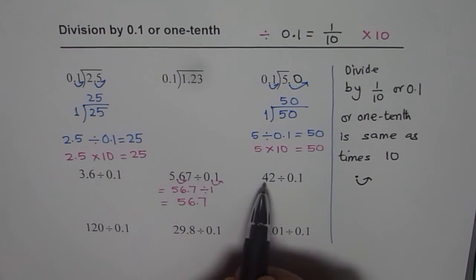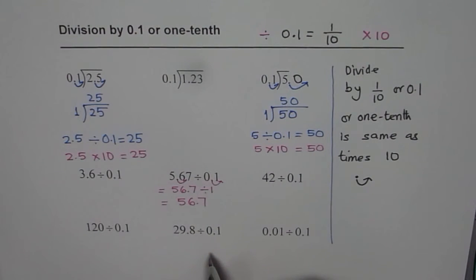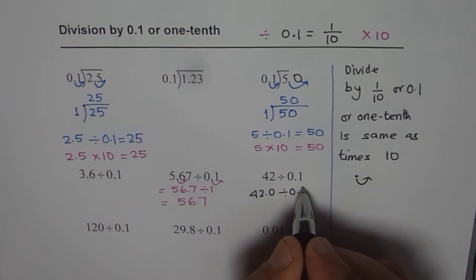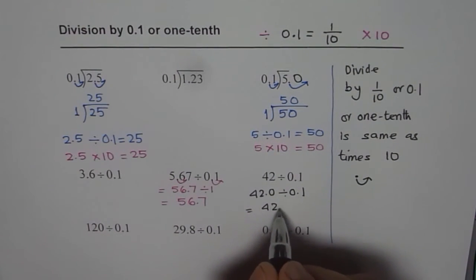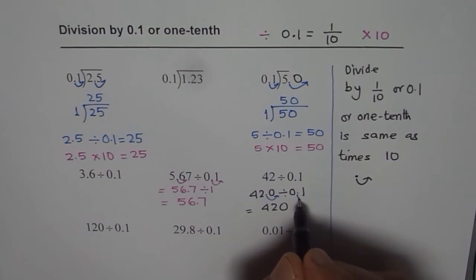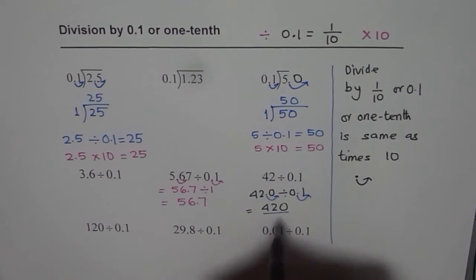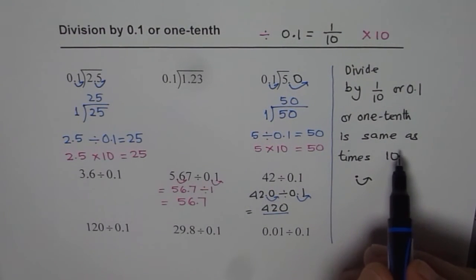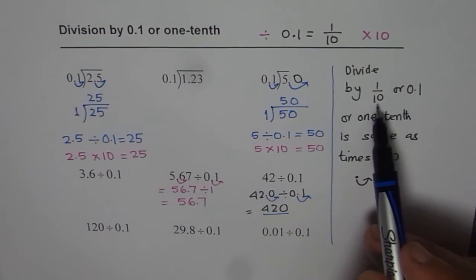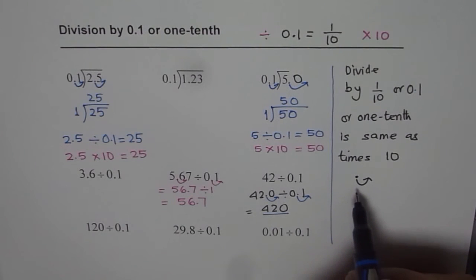So when you divide 42 by 0.1, what should we expect? Decimal will move one position to the right. So here it is 42.0. When I am dividing this by 0.1, I should get 420. That decimal moves one position to the right. Moves one position. That also has to move one position. 420. So times 10 is an easy way of finding what you should be getting when you divide by one-tenth. Simply move your decimal one position to the right and that is what you get.